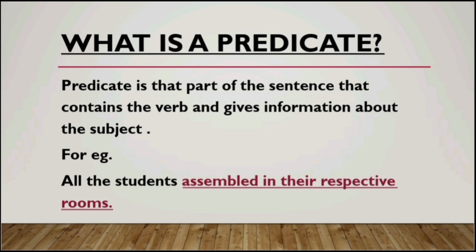We already know that a subject is the doer of an action — it is that part of the sentence around which the whole action revolves. Now let's understand predicate. Predicate is that part of the sentence that contains the verb and gives information about the subject. It states something about the subject. So it is the latter part of the sentence which has a verb and gives more information about the subject or the action being performed.